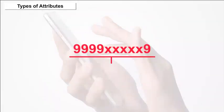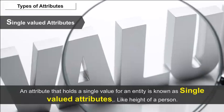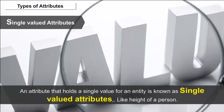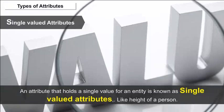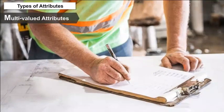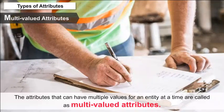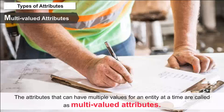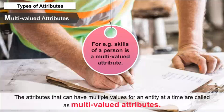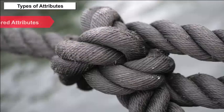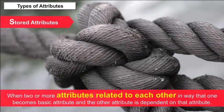Single-valued Attributes — an attribute that holds a single value for an entity is known as a single-valued attribute, like the height of a person. Multi-valued Attributes — the attributes that can have multiple values for an entity at a time are called multi-valued attributes. For example, skills of a person is a multi-valued attribute.